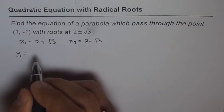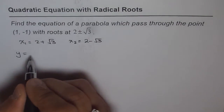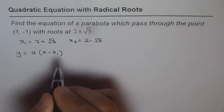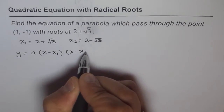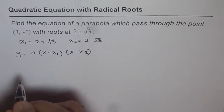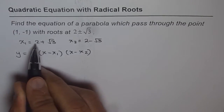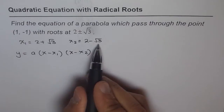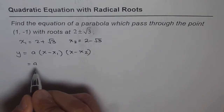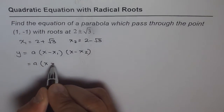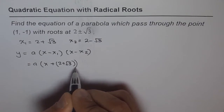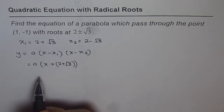The equation of a parabola with given roots can be written in factored form: a times (x minus x1) times (x minus x2). In our case, x1 is 2 plus square root 3 and x2 is 2 minus square root 3. So we can write this as x minus (2 plus square root 3).